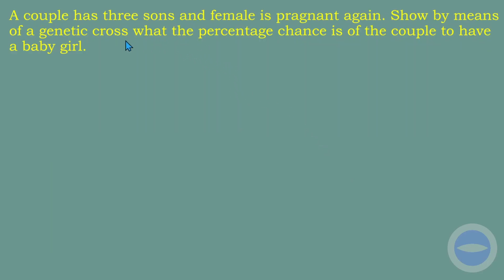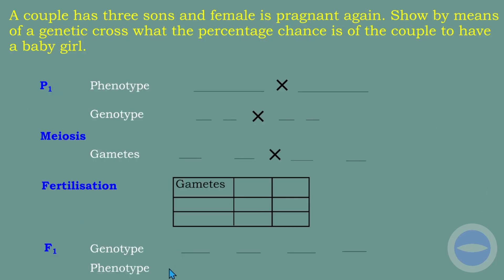Here is an example of a genetic cross: a couple has three sons and the female is pregnant again. By means of a genetic cross, what is the percentage chance of the couple having a baby girl? The children already born have no effect on the gender of the new baby, so we only consider the parents.